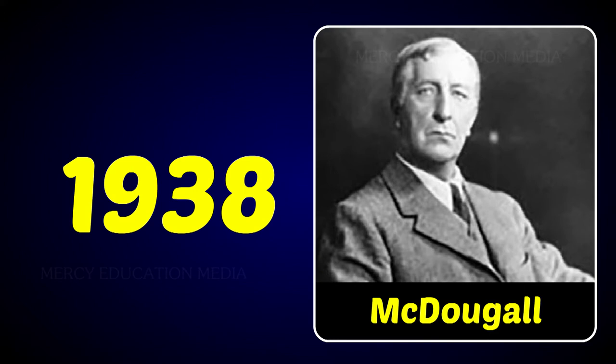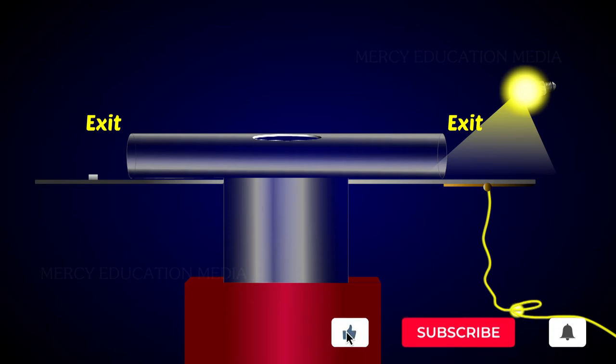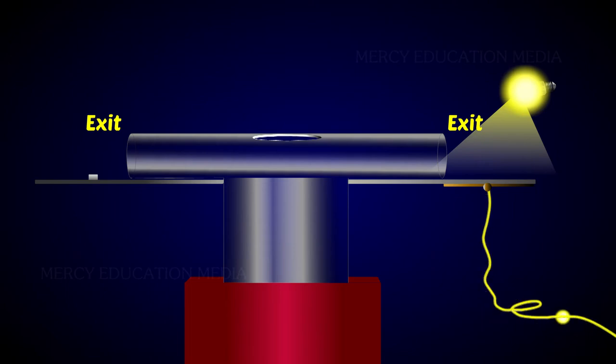He did his experiments on rats. He devised a T-shaped tank. The tank had two exits. One exit was well lighted. In the terminal region of the exit, he devised an arrangement for giving electrical shock. The pathway to the other exit was kept dark. At the terminal point, a small piece of cheese was kept as a reward.